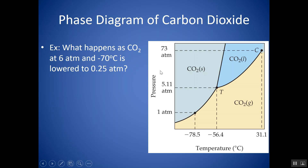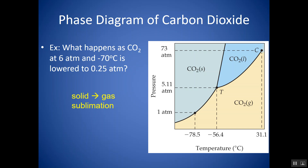Here's a phase diagram for carbon dioxide. The phases are labeled. Going horizontally, you'd first hit solid, then liquid, then gas. What happens when CO₂ at 6 atm and negative 70 degrees is lowered to 0.25 atm, with temperature staying constant? Starting at 6 atm and negative 70 degrees, we're in the solid phase. Lowering the pressure to 0.25 atm, we go from solid to gas — that's sublimation. Make sure you know the names of those phase changes.